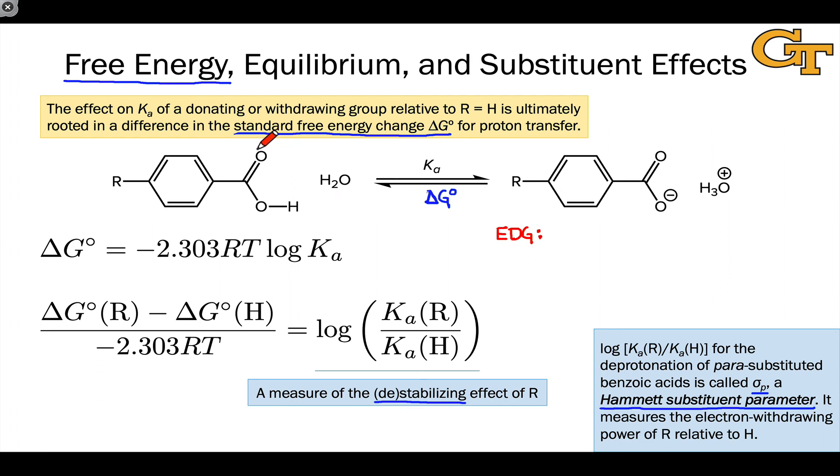That's going to decrease the acidity of the starting benzoic acid. That will decrease the Ka value. This Ka for R will be smaller than the Ka for benzoic acid itself. Ka for the, say, paramethoxy or paradimethyl amino will be smaller than the Ka for benzoic acid. And so, the sigma parameter, the Hammett substituent constant, will be less than zero. This, again, is one way we can define empirically, experimentally using these measured Ka values, what an electron-donating group is.